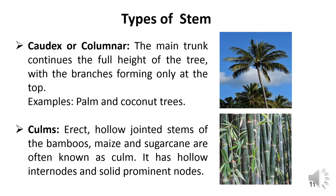The third form is colic branching, in which the main trunk continues the full height of the tree with branches forming only at the top. The main stem is very tall and unbranched with a crown of leaves only at the apex, for example palm and coconut trees. The fourth form is culm, which is the above-ground stem of a grass. It is derived from the Latin word 'calmus' meaning top. It is an erect, hollow, jointed stem found in bamboo, maize and sugar cane, with hollow internodes and solid prominent nodes.